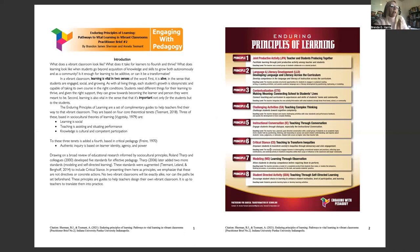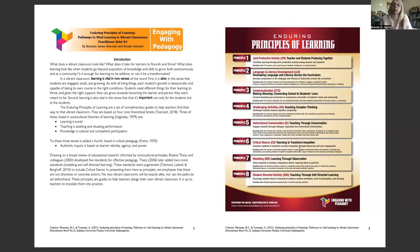If we really believe all learners should have quality education and access to excellent learning opportunities and outcomes, then we have to interrupt that educational pipeline, which has been leaking since its beginning. So how do we handle Principle 6 — the critical stance? It says: teaching to transform inequities, empowering students to transform society's inequities through democracy and civic engagement.